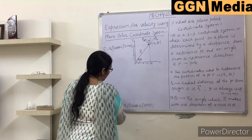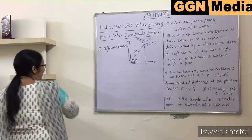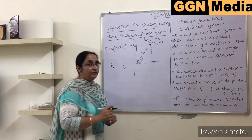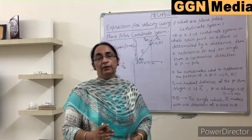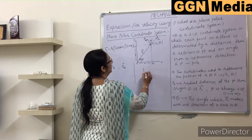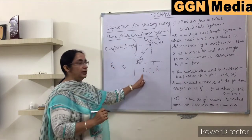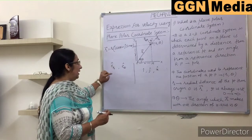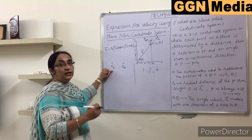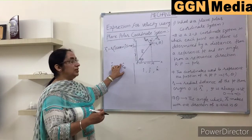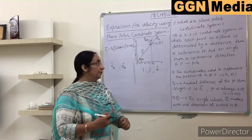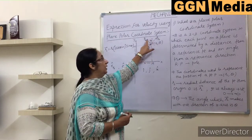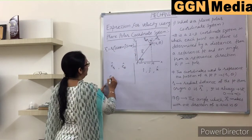Now let us write the unit vectors in the plane polar coordinate system. These are ê_r and ê_θ. Just as in the Cartesian coordinate system we used î, ĵ, k̂ as unit vectors along the x, y, and z axes, similarly ê_r is the unit vector in the increasing direction of R, and ê_θ is the unit vector in the increasing direction of θ. These directions are marked in the diagram.